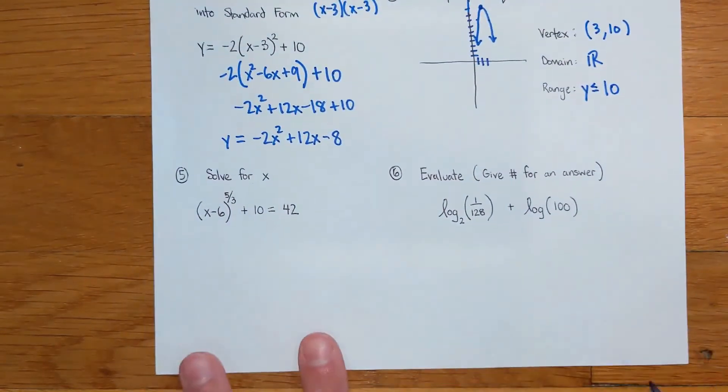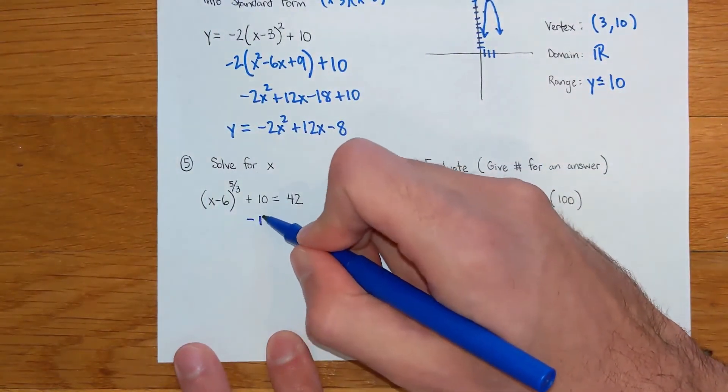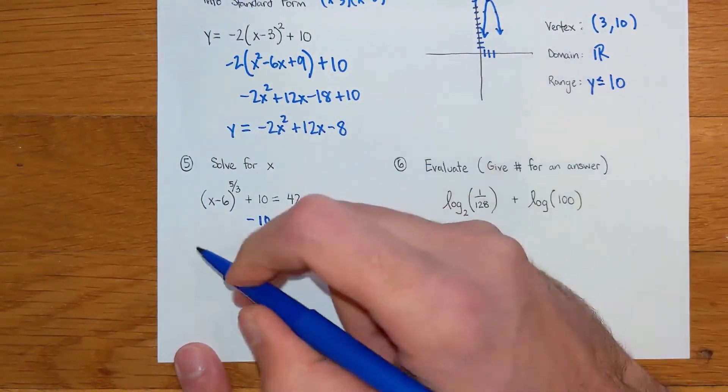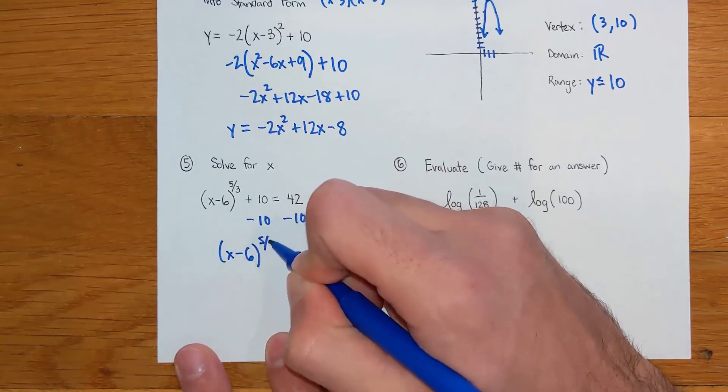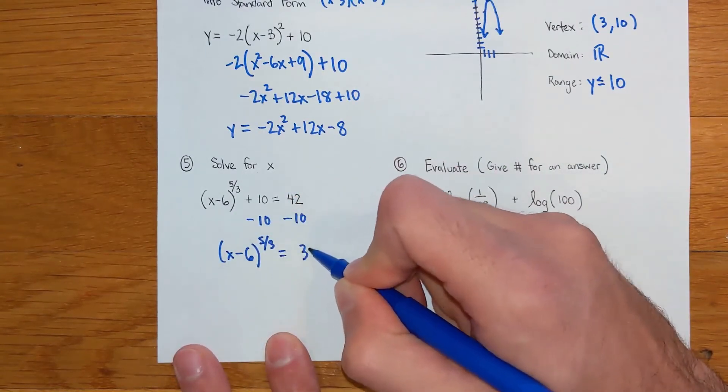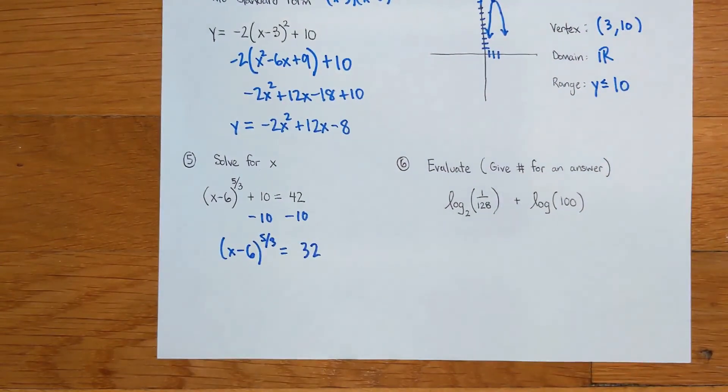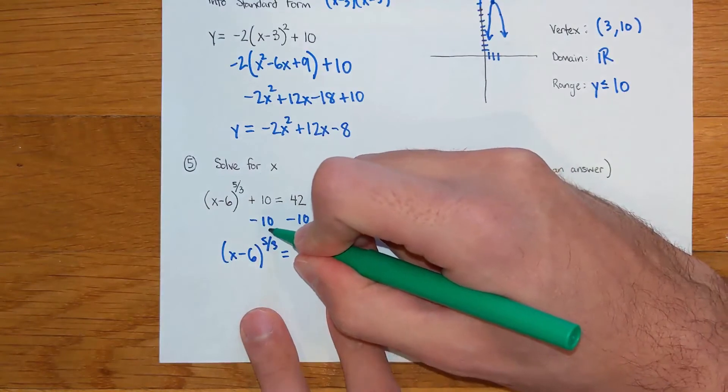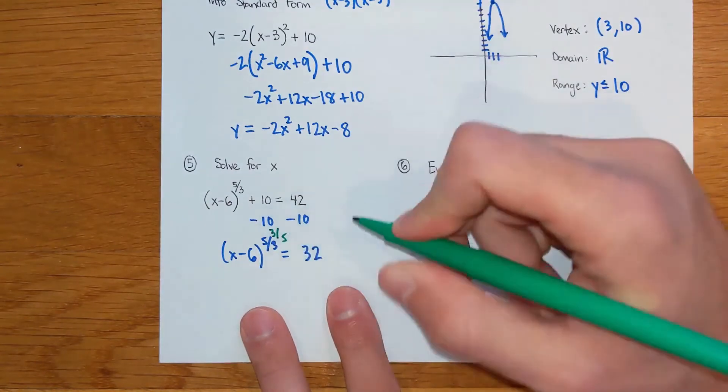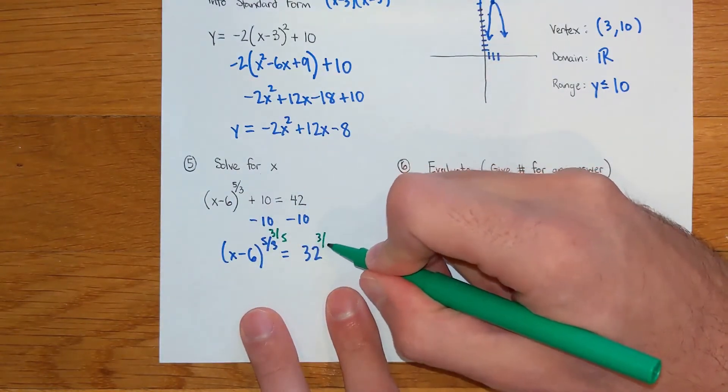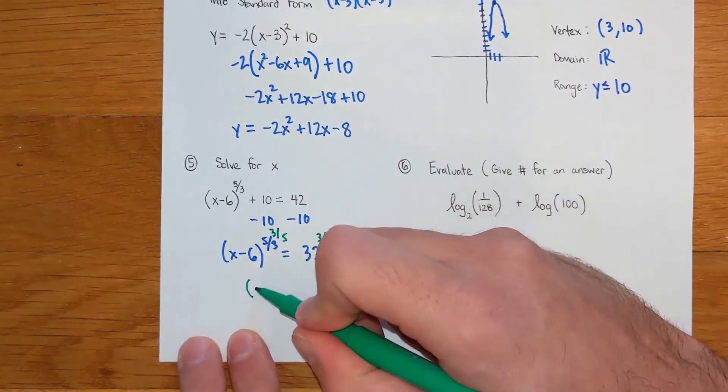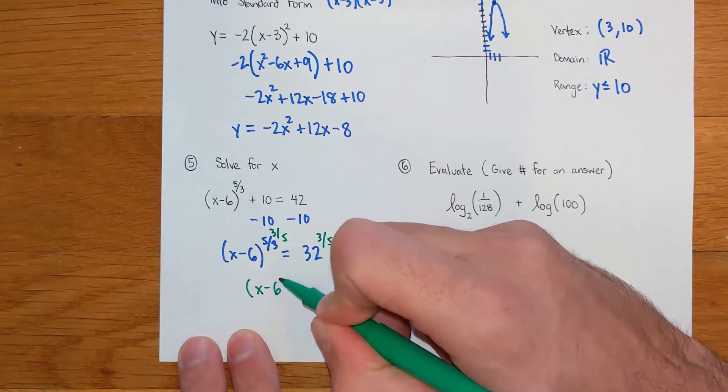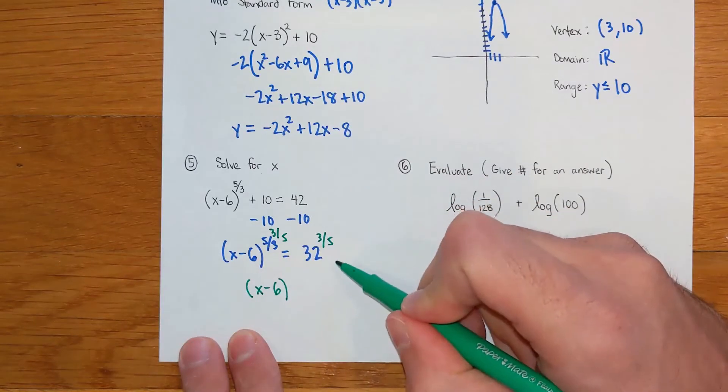All right, next problem, number five. Got to get my parenthesis by itself if I'm solving for x, so I subtract the ten, get that easy step out of the way there. When I do that I need to do an exponent to cancel out the five over three power. In order to cancel out a five over three power, I want to do a three-fifths power to both sides. So you do the reciprocal exponent. These will cancel out so I'm going to have just x minus six right here.